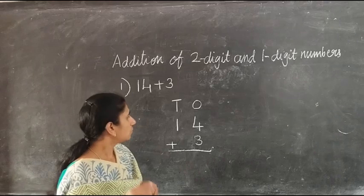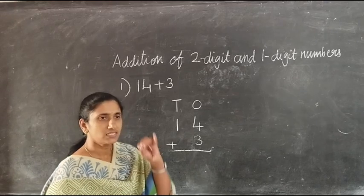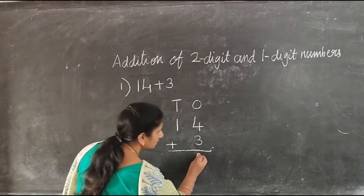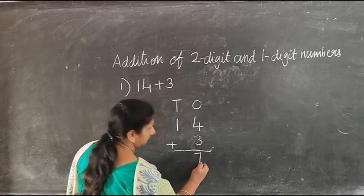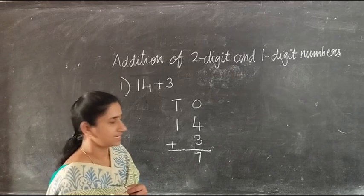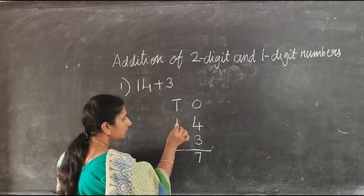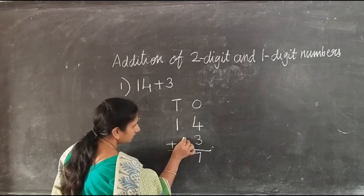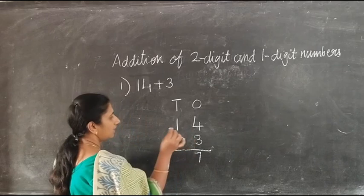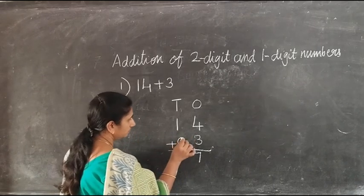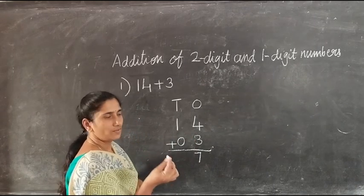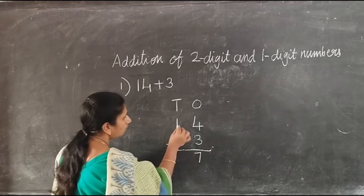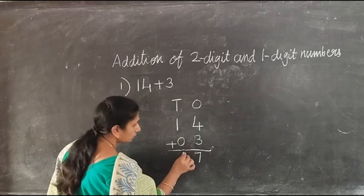Here you can use your fingers to count. So count after 4: that is 5, 6, 7. So write 7 in the ones place. Next, add the tens. Here we have 1, and below 1 there is no number, so we write 0 there. Then add 1 and 0. We already learned that when we add 0 to any number we get that number. So 1 plus 0 is equal to 1.